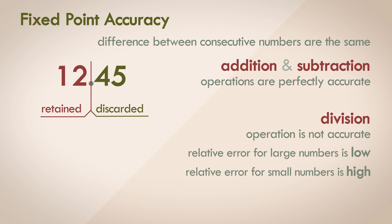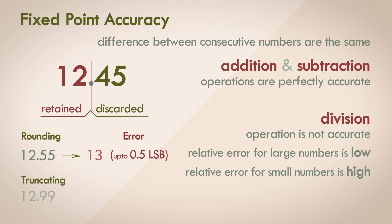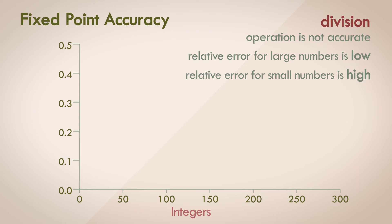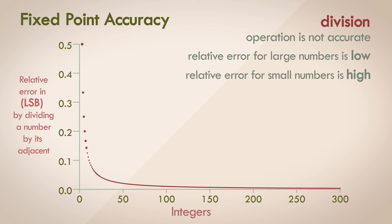If you want to quantify the error, there's a likelihood that the error will be as high as 0.5 of an LSB if you've rounded to the nearest integer, and as high as 1 LSB if you're truncating the number and discarding the fractional part completely. A graph with the x-axis representing integer numbers from 0 to 300 and the y-axis representing the relative error shows that as the number reaches 0, the relative error increases.